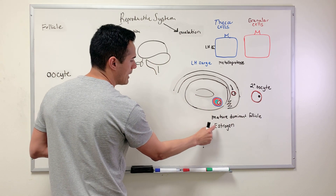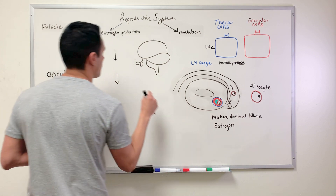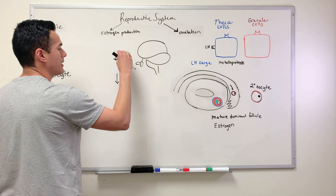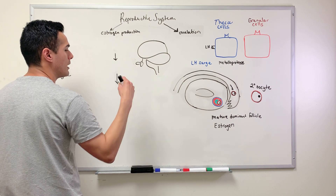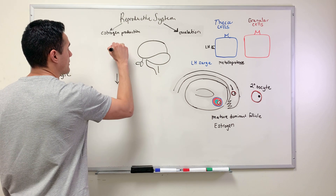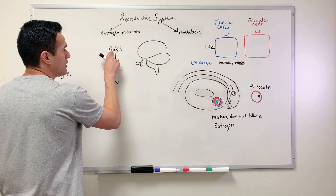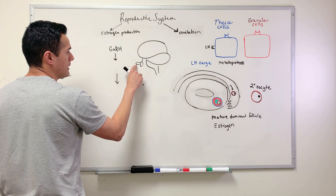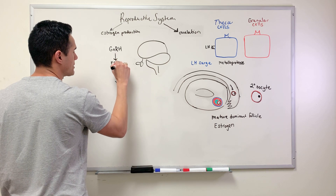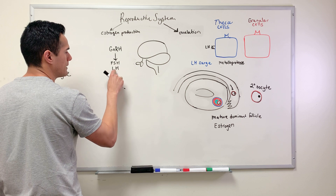To produce estrogen, we look at structures within the brain. In the hypothalamus we have gonadotropin-releasing hormone (GnRH). Once GnRH gets to the anterior pituitary, it releases FSH — follicle-stimulating hormone — and LH — luteinizing hormone.